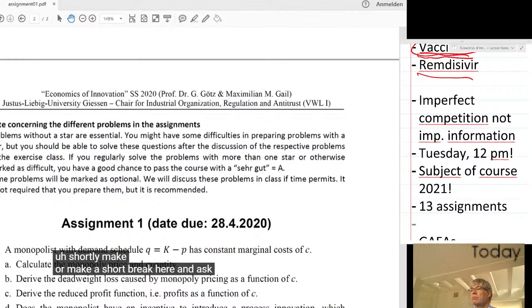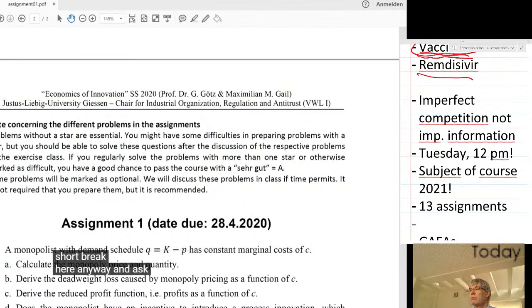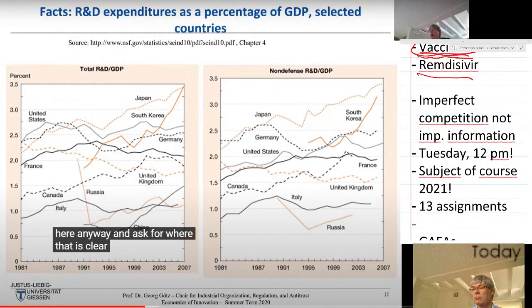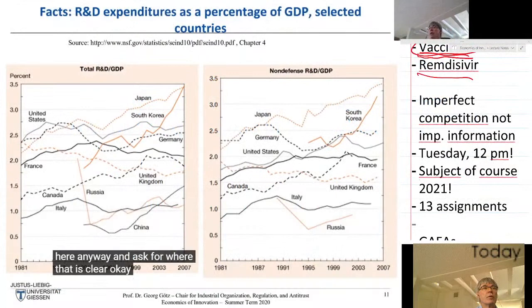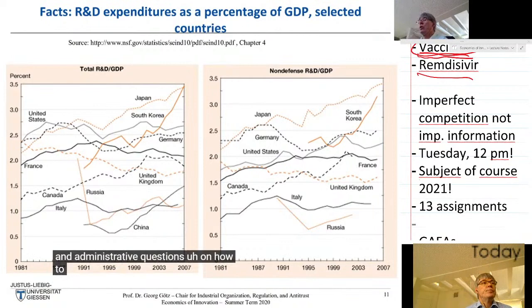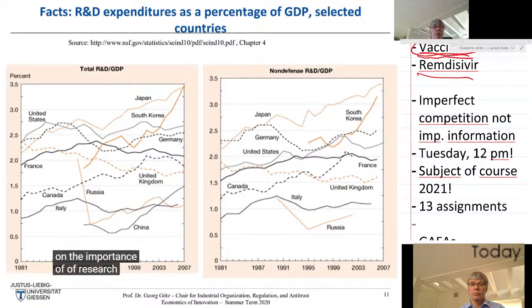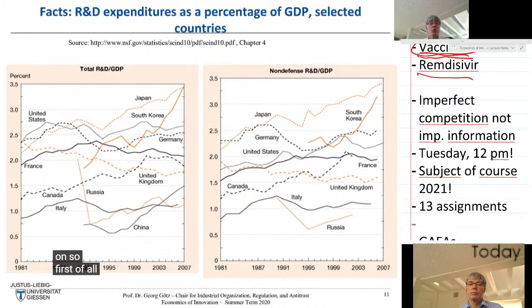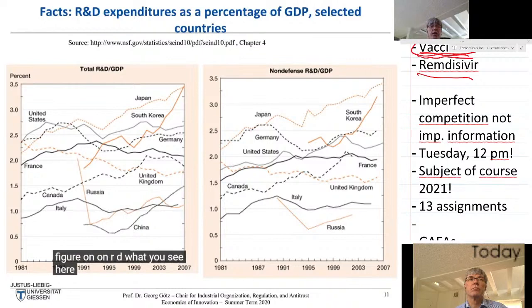I'll make a short break here and ask for questions. After discussing organizational questions on how to obtain credits, I want to go back and present a large number of data tables to give you an impression of the importance of research and development and innovation — how much different countries spend on R&D and how that might explain different national performances.